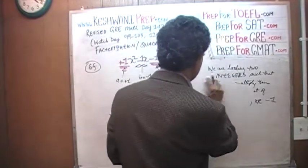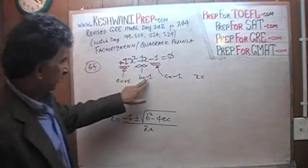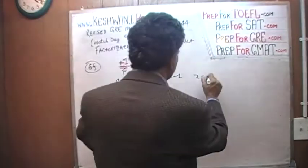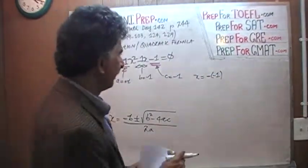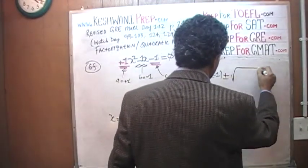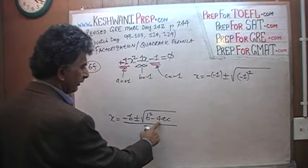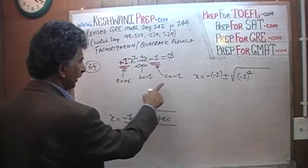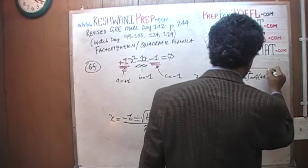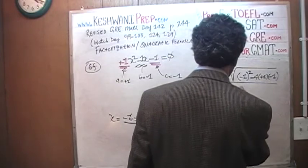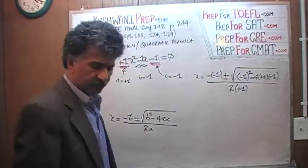We just plug in the values. x equals negative b, which is negative negative 1, plus or minus b squared — which is negative 1 squared — minus 4 times a times c, which is 4 times positive 1 times negative 1, all over 2 times a, which is positive 1. Now we simplify: negative times negative 1 is positive 1. In the square root, negative 1 squared is positive 1, and negative times negative makes the 4ac term positive 4.